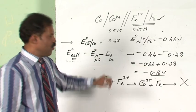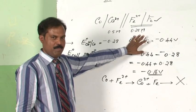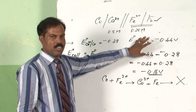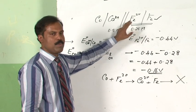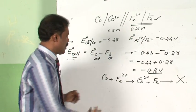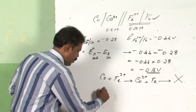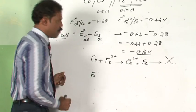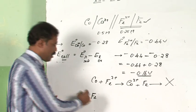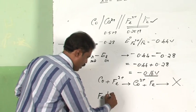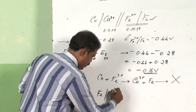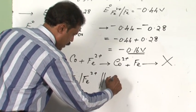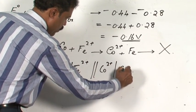If at all this reaction has to take place, if at all this cell has to work, you have to set it up in such a way that iron acts as the oxidation half and cobalt acts as the reduction half.